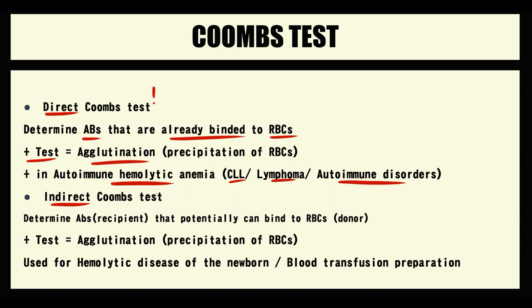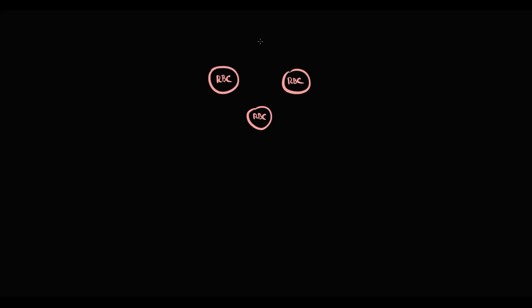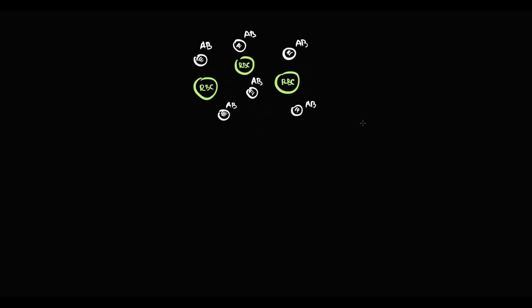In contrast, the indirect Coombs test is used to detect antibodies that potentially in the future can bind to red blood cells and cause hemolysis. So if we take a blood sample — there are some red blood cells and antibodies — we remove the red blood cells so only antibodies remain, and then we add new red blood cells. We are interested in whether an immune reaction will occur or not.